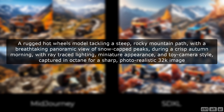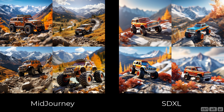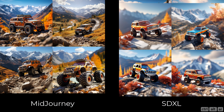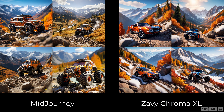Prompt: a rugged Hot Wheels model tackling a steep, rocky mountain path, with a breathtaking panoramic view of snow-capped peaks, during a crisp autumn morning, with ray-traced lighting, miniature appearance, and toy camera style. Captured in Octane, 4K sharp, photorealistic 32K image. With or without the checkpoint, I find SDXL on par with MidJourney.